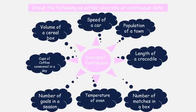I encourage you to pause the video and think about these eight things here and think if they're classified as discrete or continuous. I know the answers are also in the slides here, but let me walk through these. Volume of a cereal box, speed of a bicycle, population of a town, length of a crocodile, number of matches in a box, temperature of an oven, number of goals in a hockey season, and cups of coffee consumed per day. These are all variables, they're all different data values. Are they counts or are they measurements?